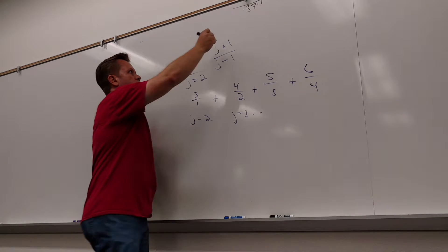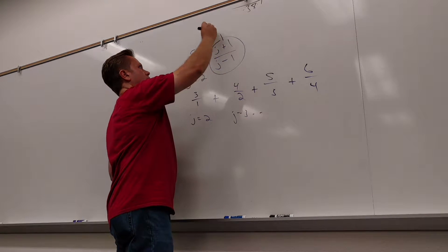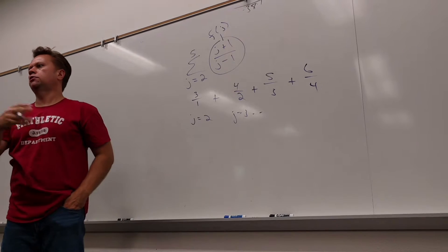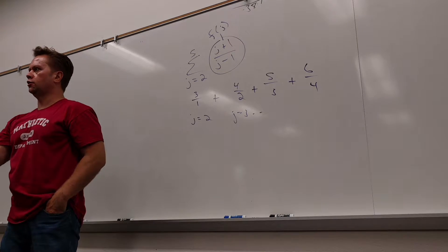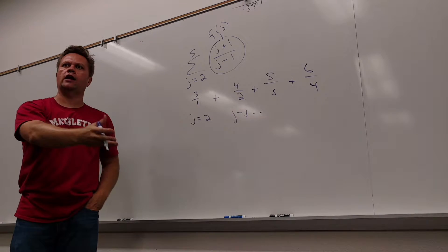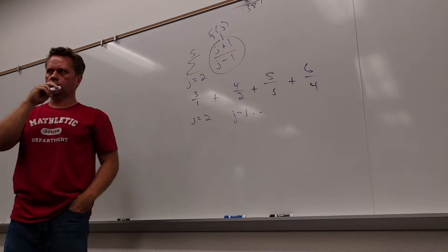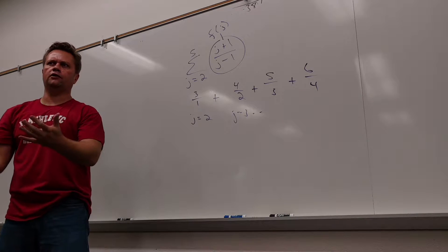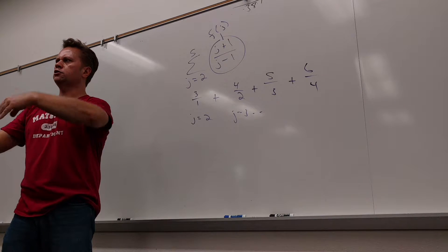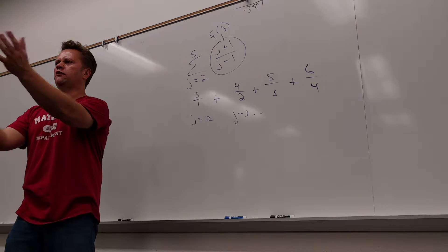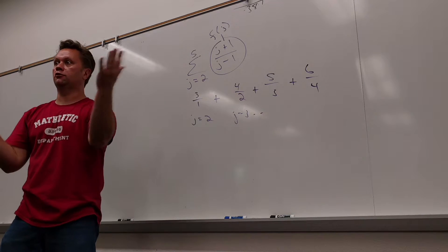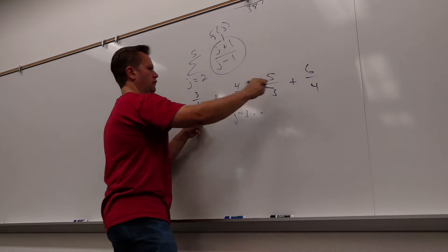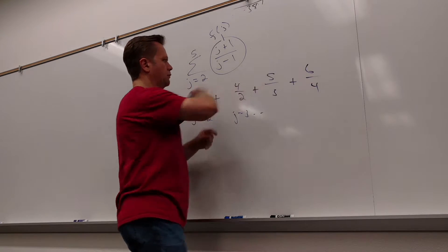3 minus 1 is 2, 4 minus 1 is 3, 5 minus 1 is 4. In one sense this inside is like f of j, right? You're just plugging something in and letting j change from 2 to 5. 4 over 2 is 2. Are you guys with that? So it's one level above functions — it says plug a bunch of stuff into this function and then add up all your results.